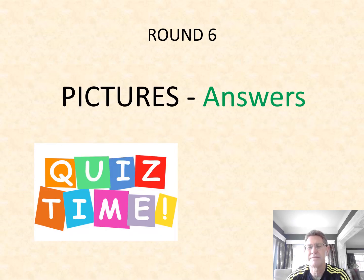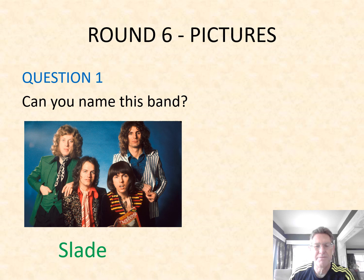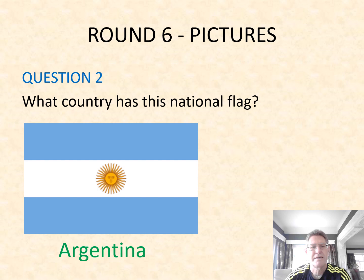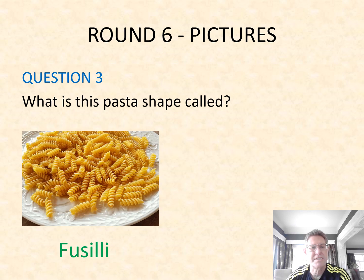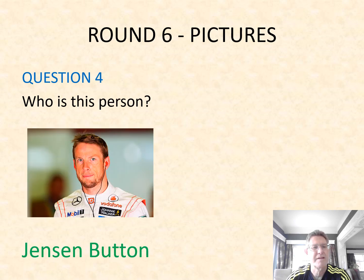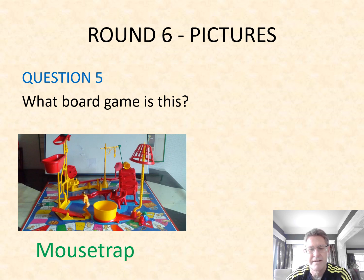On to our last round — the pictures round. Question one: can you name this band? They are Slade — still going to this day, believe it or not. Question two: what country has this national flag? This is the Argentine national flag — Argentina. Question three: what is this pasta shape called? It's called fusilli — whatever you call it, its actual name is fusilli. Question four: who is this person? This person is Jenson Button, Formula One driver. Question five: what board game is this? That is Mousetrap.